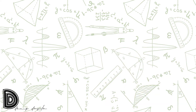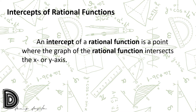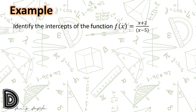Let us proceed to the intercepts of rational functions. An intercept of a rational function is a point where the graph of the rational function intersects the x or the y-axis. Let's have an example: identify the intercepts of the function f(x) = (x+2) / (x−5). To intersect the axis, a coordinate of the point on the graph representing the function must be equal to zero.